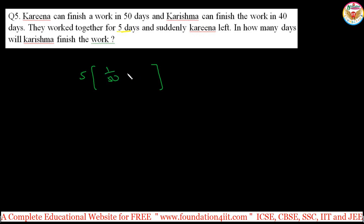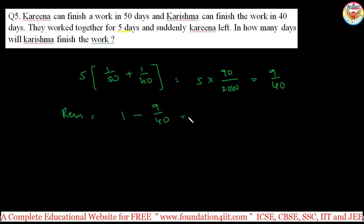One day Kareena can do 1/50 of the work, and Karishma can do 1/40. So in 5 days together: 5 × (1/50 + 1/40) = 5 × (9/200) = 9/40 of the work is done. Remaining work = 1 − 9/40 = 31/40. This 31/40 must be done by Karishma alone. Karishma takes 40 days for the full work, so she takes 31/40 × 40 = 31 days for the remaining part.